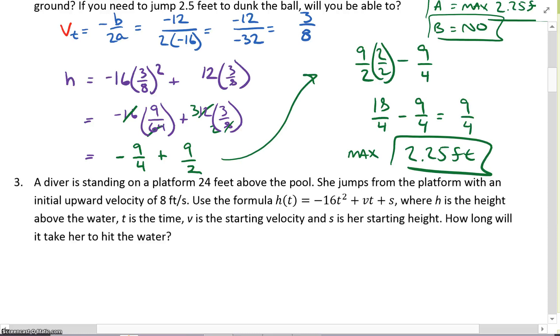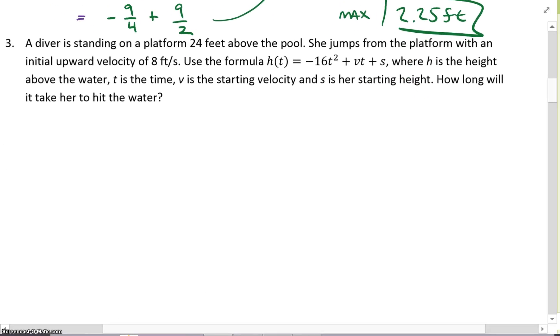Next example. A diver is standing on a platform 24 feet above a pool. She jumps from the platform with an initial upward velocity of 8 feet per second. Using the formula h(t) = -16t² + vt + s, where h is the height above the water, t is the time, v is the velocity, and s is their starting point. How long will it take her to hit the water?